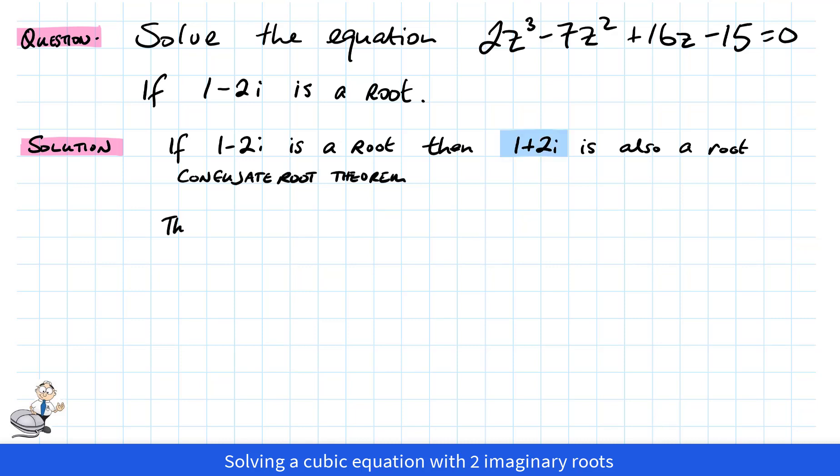Now if we have two roots, we could create two factors. So if z = 1 - 2i, then z - (1 - 2i) is a factor. And if z = 1 + 2i, then z - (1 + 2i) is a factor.